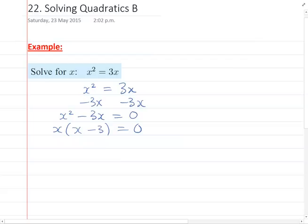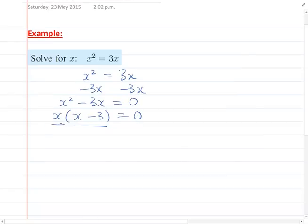And hopefully now you can see it's just the same as any other quadratic we've done so far. And so we've got these two things multiplying together to make 0. So that means that one of them has to be 0. So this is where we write either x equals 0 or x minus 3 equals 0.